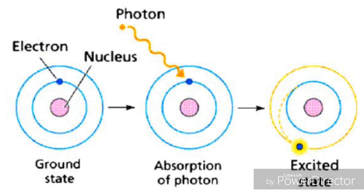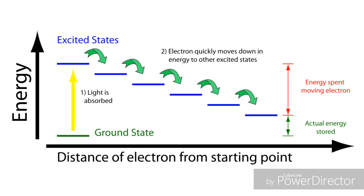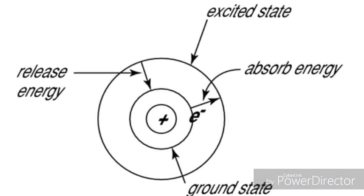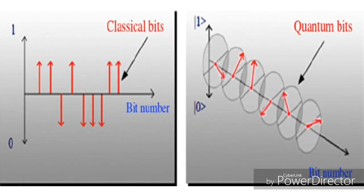Let's consider a hydrogen atom where we allow an electron to be in two states: the ground state and the excited state. The ground state has low energy and the excited state has high energy. When you give energy to the electron, it gets excited and goes from the ground state to the excited state. In classical terms, we can think of the electron staying in two states — ground or excited — and encode a bit: if the electron is in the ground state, it's zero; if it's in the excited state, it's one.